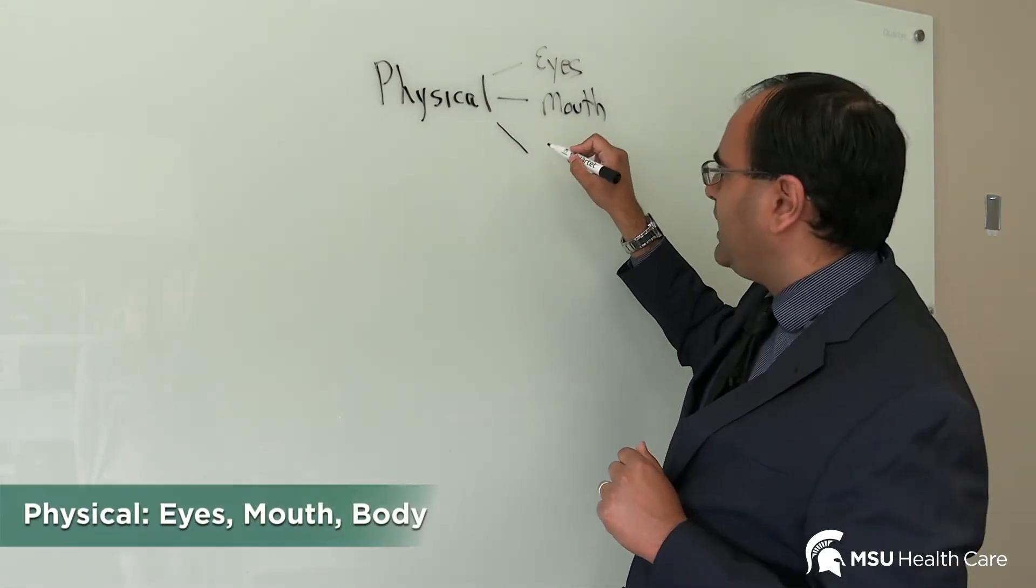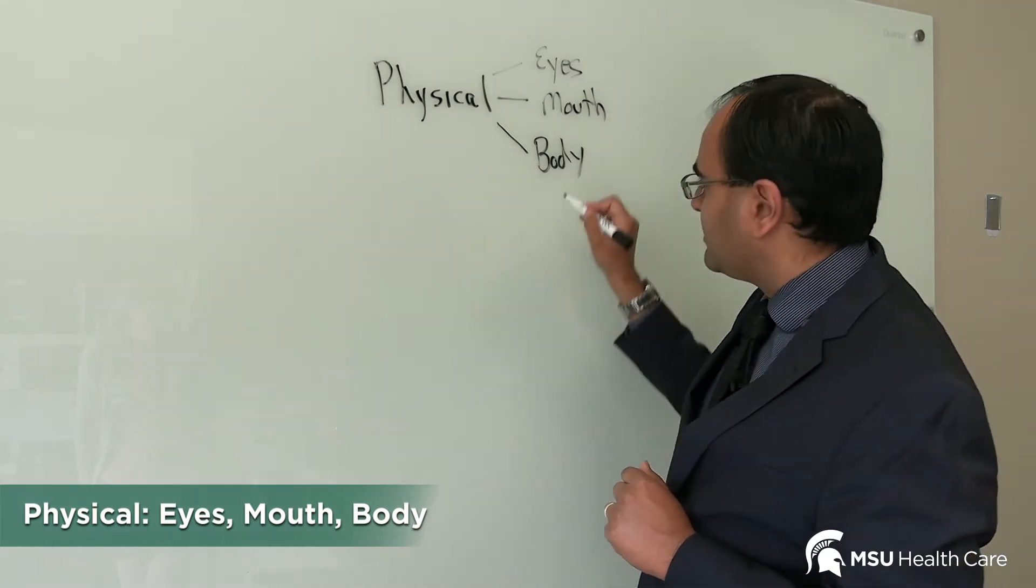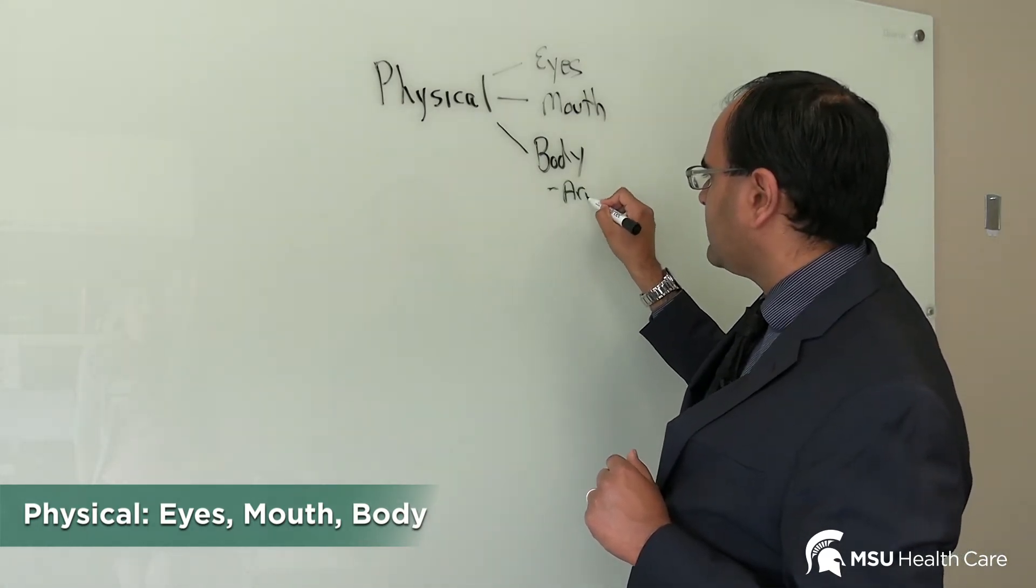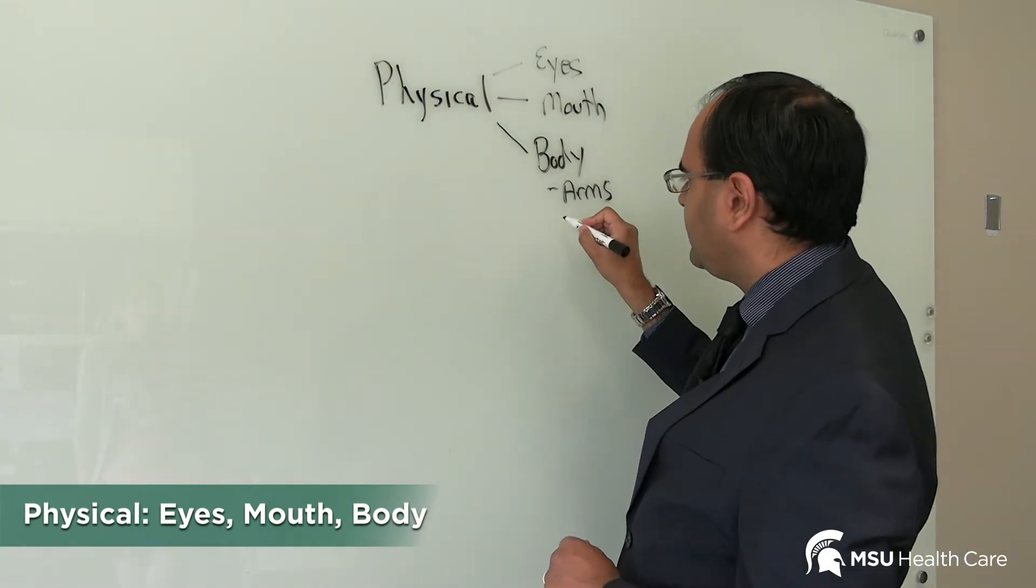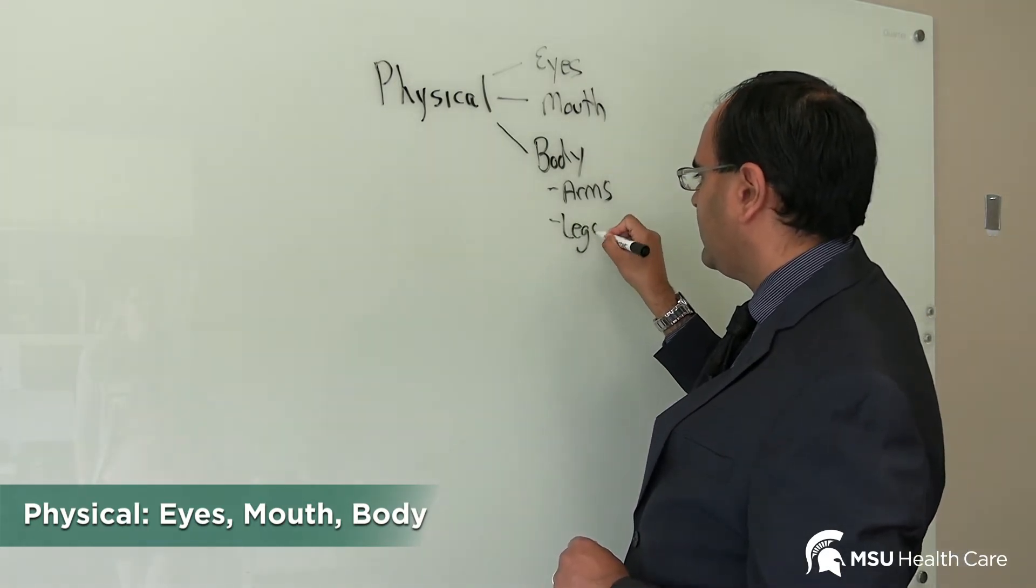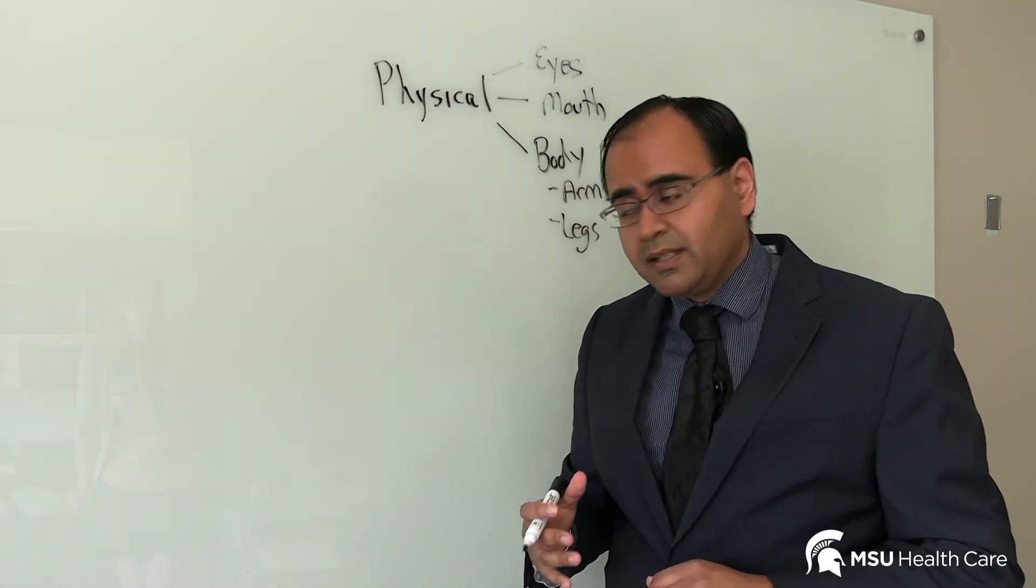The third is the body, and this body exam is split into arms where we focus on the deltoid and legs, where we focus on the hips, the ability to rise from a chair for example.